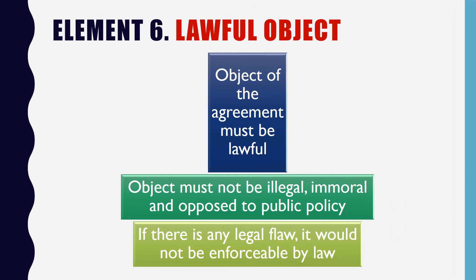Element 6: Lawful Object. The object of the agreement must be lawful. The object is the main core element of the contract or agreement. In the first example, Ramya sells her bicycle to Ms. Divya at Rs. 5000 — selling a bicycle is a legal and lawful object. In another example, if Mr. Ram sells drugs or prohibited goods to someone, it is illegal, immoral, and opposed to public policy. So if there is any legal flaw in the object, it would not be enforceable by law.